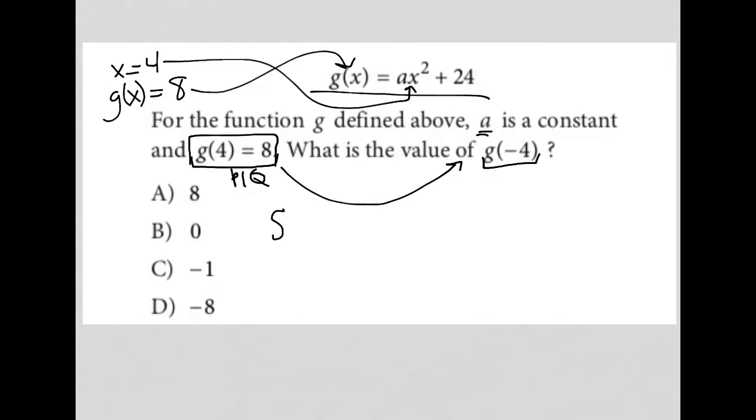So I will have 8 instead of g(x) is equal to a, which I know is a constant but I'm not sure what the value is, times 4 squared plus 24. That simplifies to 8 equals 16a plus 24.